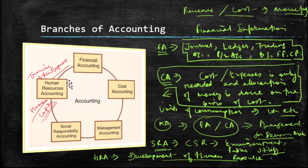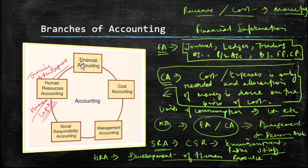In cost accounting, units of consumption or resources are also considered alongside monetary information. In management accounting, both financial accounting and cost accounting are taken together and transformed into a more presentable way, communicated to the management for decision making. Social responsibility accounting refers to corporate social responsibility expenses — records of environmental maintenance or public utility are maintained. Lastly, human resource accounting focuses on the recording of training and developmental expenses and how these benefit the company's employees.